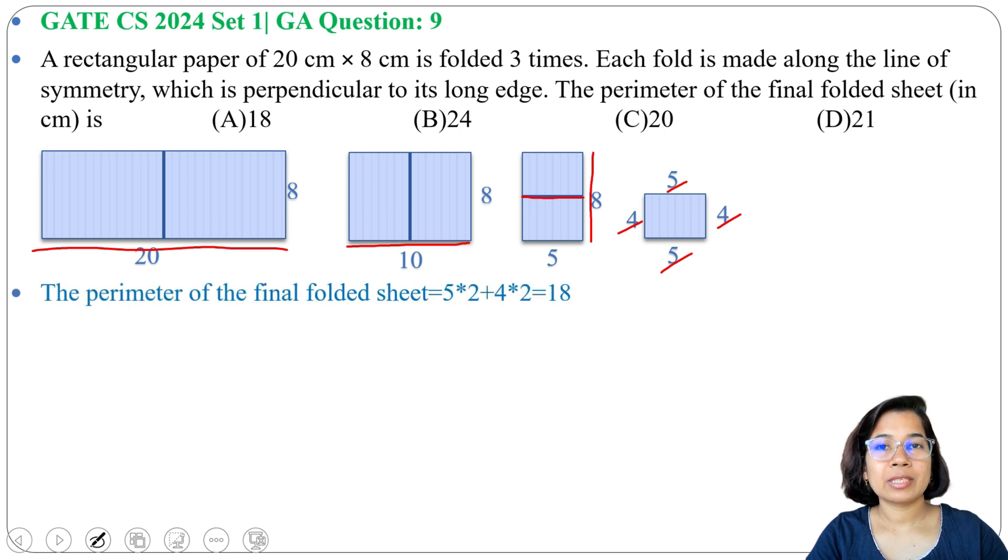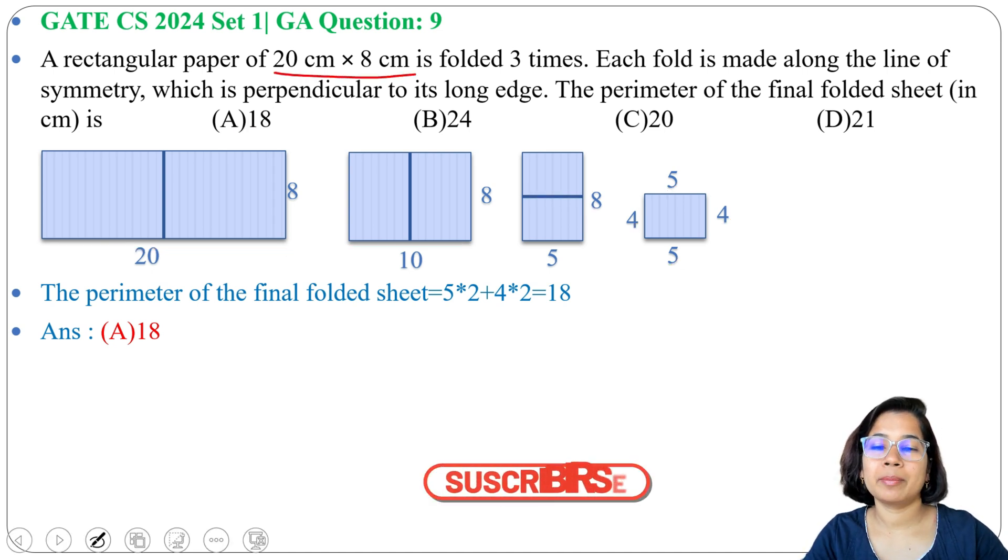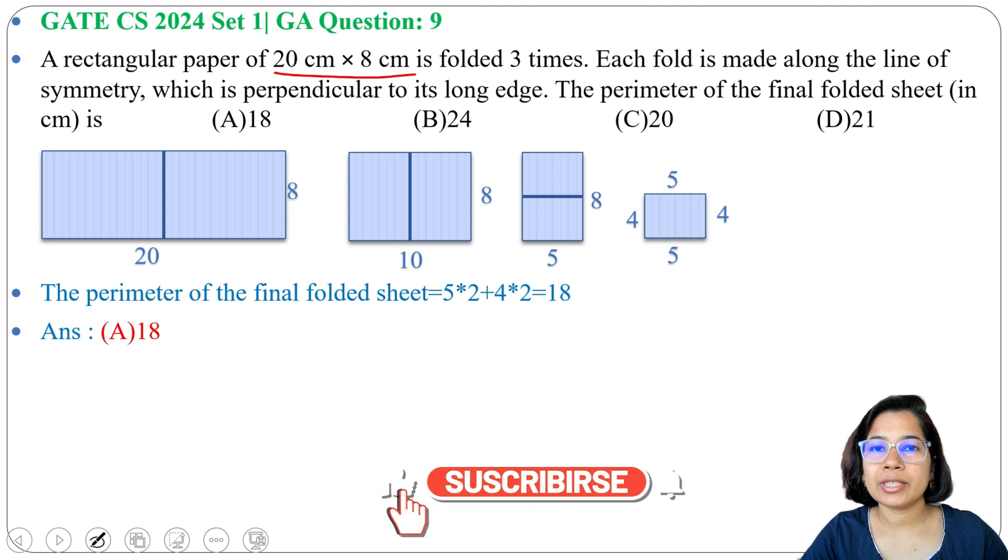So the perimeter of this final folded sheet is 18. 10 + 8 is 18. So answer will be option A, 18. This is a very easy question, just you need to imagine that rectangular paper. If this lecture is helpful for you, please like, share and subscribe. Thank you.